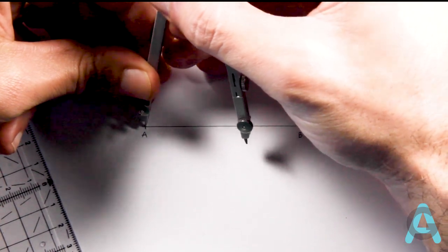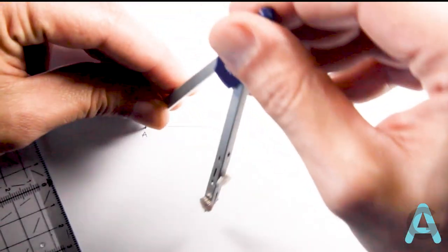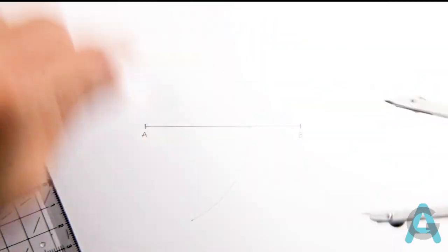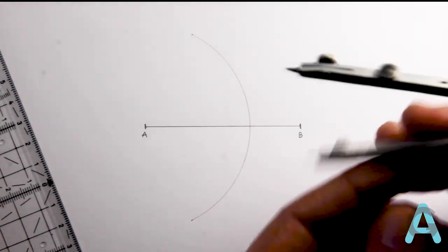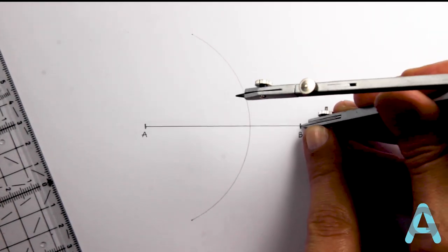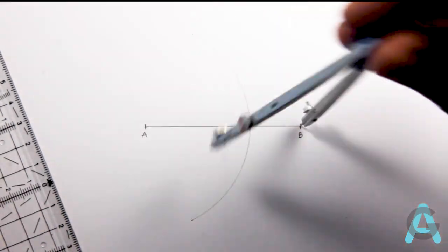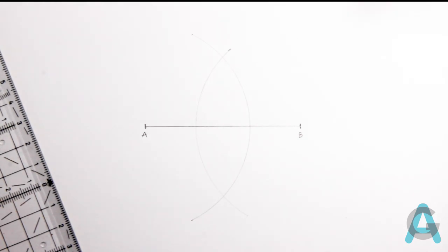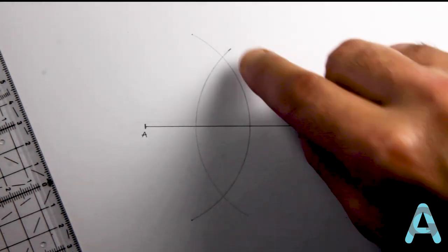Then put the compass needle at point A and draw an arc. Then without changing the aperture of the compass, change the needle to B and draw another arc. With this operation you will have point 1 and point 2.